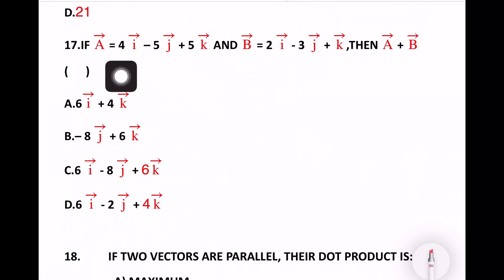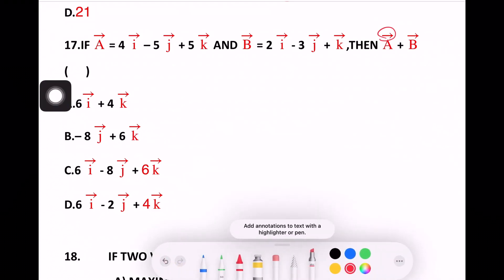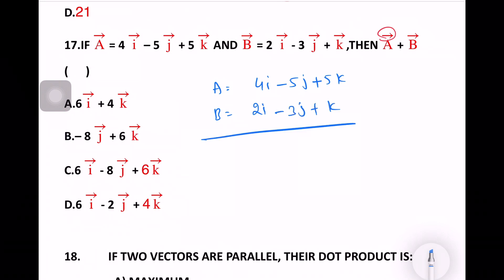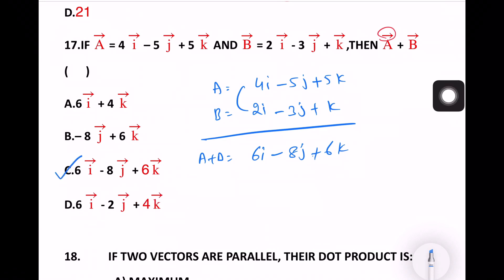Next question: If a = 4i − 5j + 5k and b = 2i − 3j + k, find a + b. Adding corresponding components: (4+2)i + (−5−3)j + (5+1)k = 6i − 8j + 6k. Option number C is the right answer.